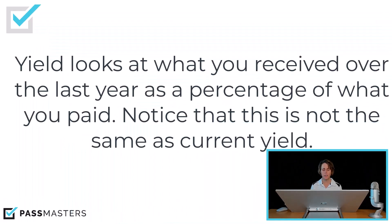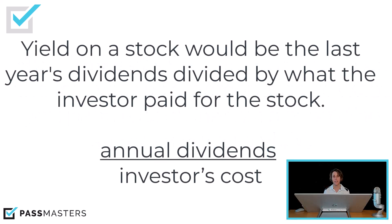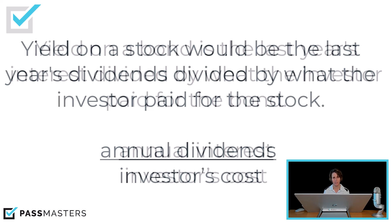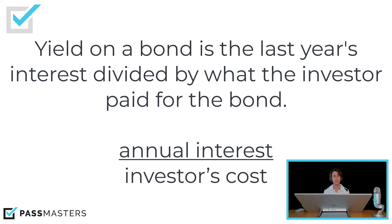Yield looks at what you received over the last year as a percentage of what you paid for the security. So it's different from current yield — be careful. Yield on a stock would be the sum of the previous four quarters' dividends, so annual dividends, divided by what you paid for the stock. Yield on a bond would be annual interest divided by what you paid for the bond.